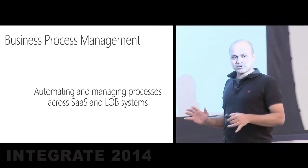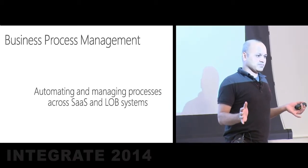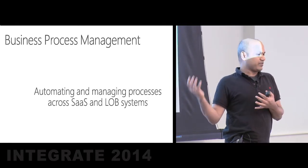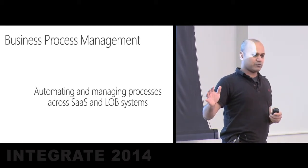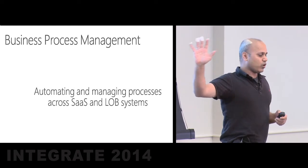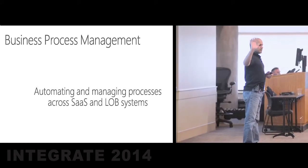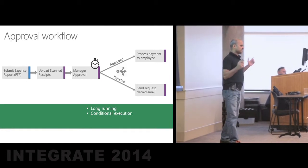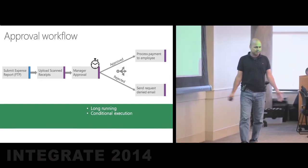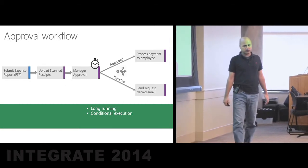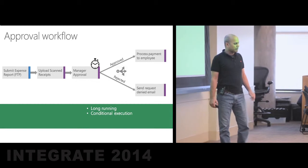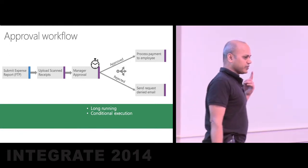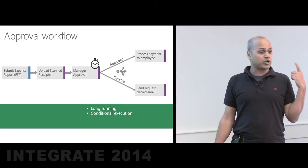We took this definition and requirement onto certain common BizTalk patterns — the most commonly used ones by customers — to identify any additional requirements for the BPM system we're building. We picked five patterns. Let's start with the most common: the approval workflow. It typically starts with somebody submitting an expense report, uploading data, and sending it for manager approval. A manager need not approve immediately — it could take a day or longer. This puts a requirement on us: the BPM system needs to support long-running processes — a day, a week, months.